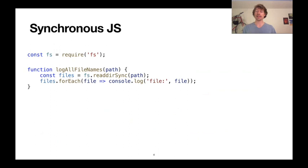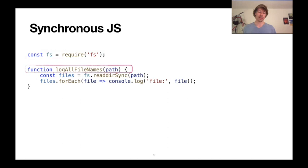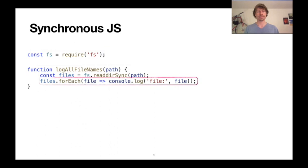First, we import a file system utility called fs. We then define a function called logAllFileNames that takes in a path. We call fs.readdirSync, the synchronous utility for getting a directory on that path. And then for each file returned by that read, we'll just log it to console. Pretty straightforward.